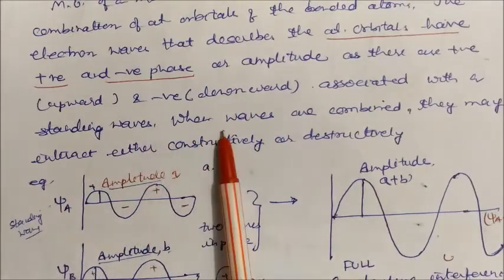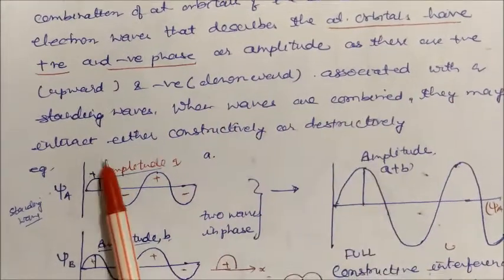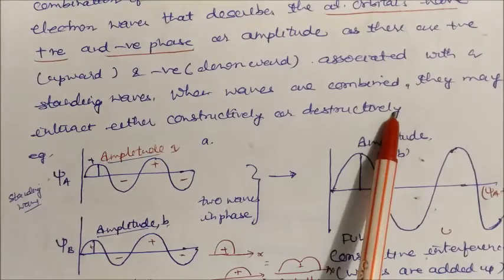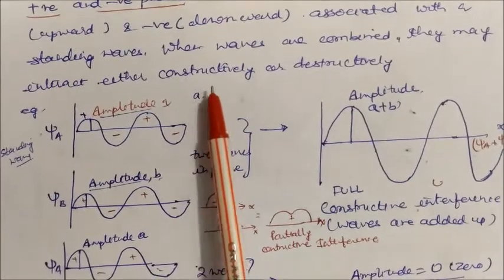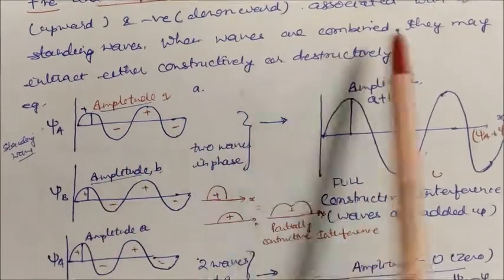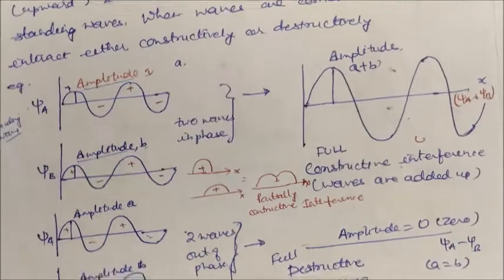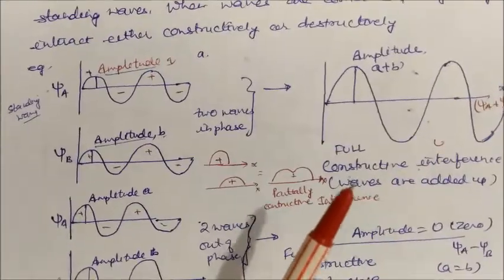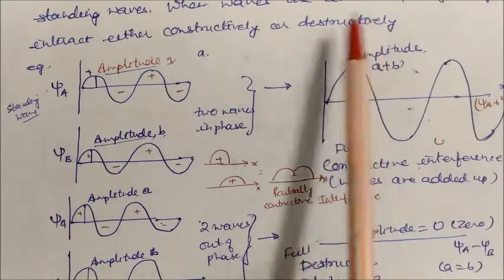When these waves — these orbitals — are combined, they may interact either constructively or destructively. If you have not studied what constructive and destructive interference means, I am giving you some examples here to understand these two terms: what is the meaning of constructive and destructive interference.